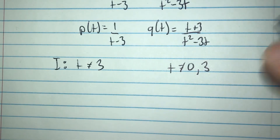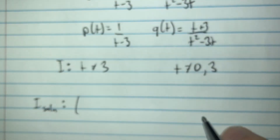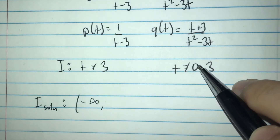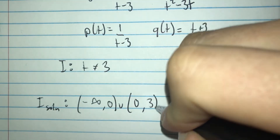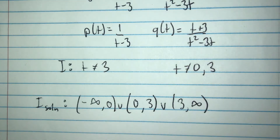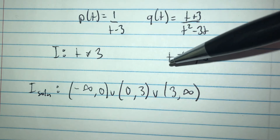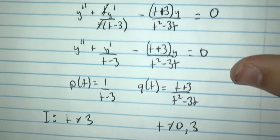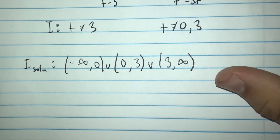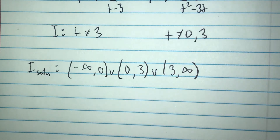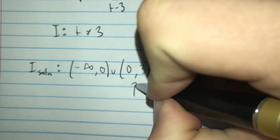We find the intervals for p of t and q of t to determine the solution interval. The candidate intervals are negative infinity to 0, then 0 to 3, and then 3 to infinity. Going back to the initial condition y of 1 equals 2, we see t equals 1. Since 1 falls in the interval 0 to 3, the interval of the solution is 0 to 3.